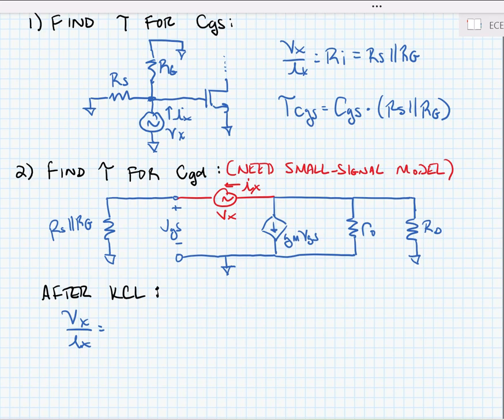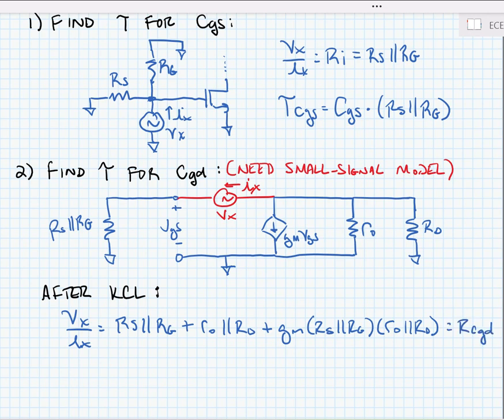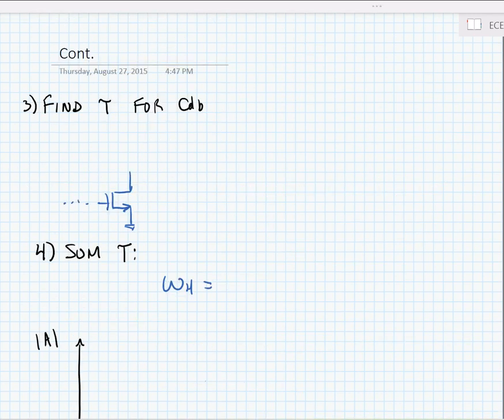In this case, we need the small signal model because we have two nodes that we have to analyze. And in order to do this, we need KCL at both of those nodes. Now I'm not going to do the KCL analysis on the video, but after the KCL analysis, we would end up with an expression like the following. We have RS in parallel with RG plus RL parallel with RD plus GM times RS parallel with RG times RL parallel with RD. This is equal to, we'll call it, RCGD. Now tau for this, CGD is then just equal to CGD times the resistance we just found, RCGD.